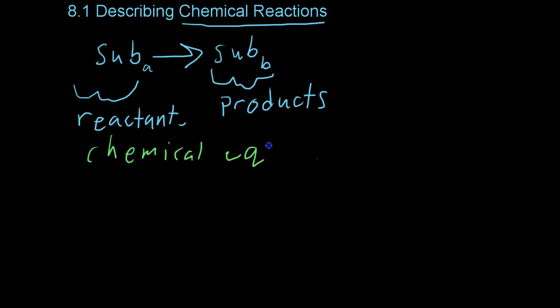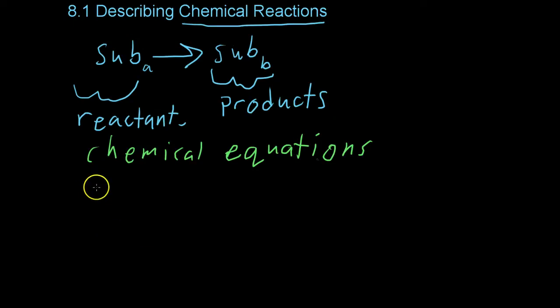These chemical equations use the symbols and formulas that we've already discussed based on a substance's makeup in order to balance and obey the law of conservation of mass. Basically, mass can't be created or destroyed. You have to have the same on one side, in this case substance A, as you do on the other side once you're finished with your reaction.